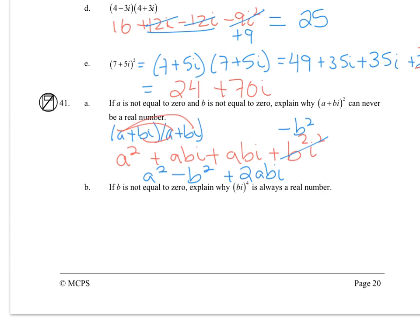Why is (bi)⁴ always a real number? That means we get b⁴i⁴, and i⁴ is 1. So our answer is always then just b⁴, and since b is real, that whole term is real.